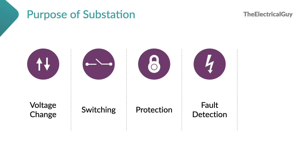If there were no substations in the power system and we were just generating power and giving it to the end user, then if there is a fault on the system it would be a disaster — there would be no protection system, no fault detection system. It can cause loss of life and financial loss, because critical facilities like hospitals would stop working if there is no power. So fault detection is one of the important purposes of a substation.